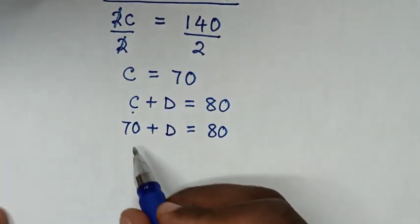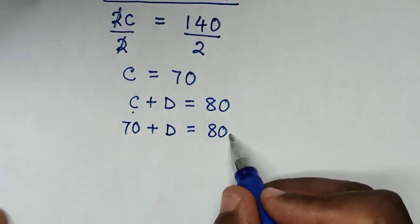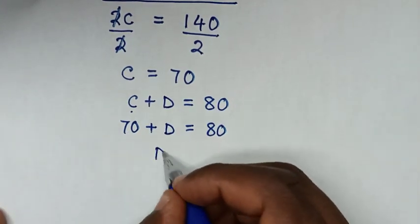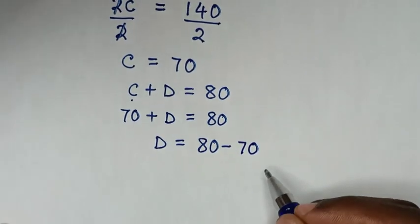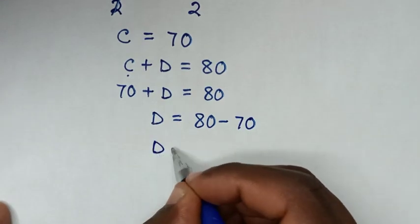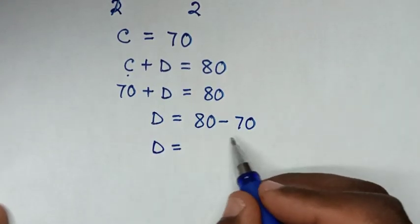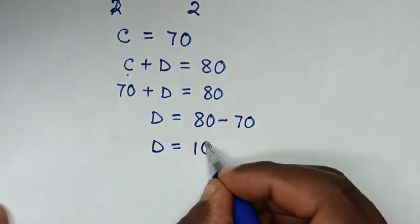Then we take this 70 to the right side. So it will be D equals 80 minus 70. Then it will be D equals 10.